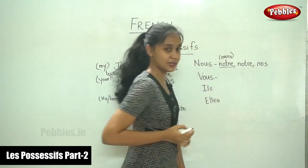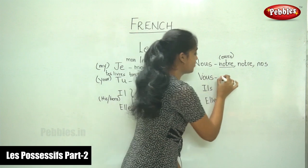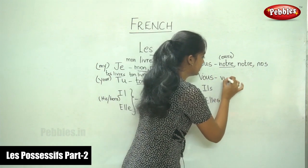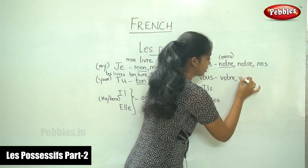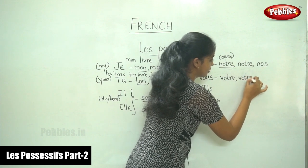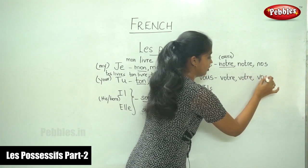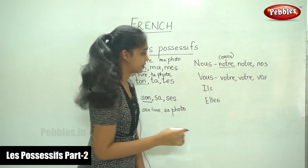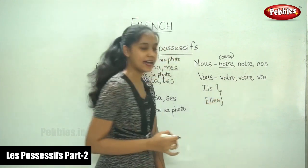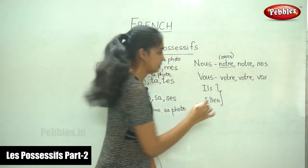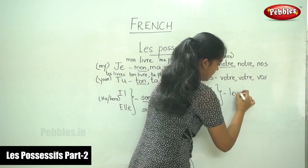Next, for vous, similarly, for masculine and feminine, we have the same possessive — it is votre. And vos for plural. Finally, for ils and elles, it is leur.